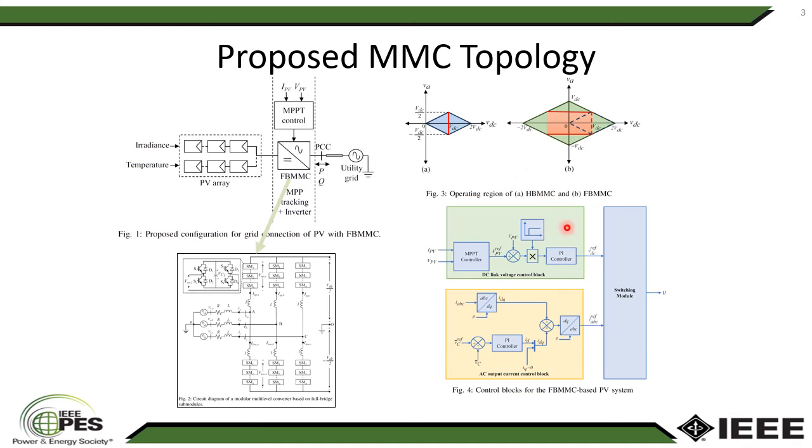In addition, following controls as in figure 4 are proposed to support the modulation of FBMMC. First, the DC link voltage control block will also include MPPT control, and AC output current control block makes sure that no energy is trapped in FBMMC block.